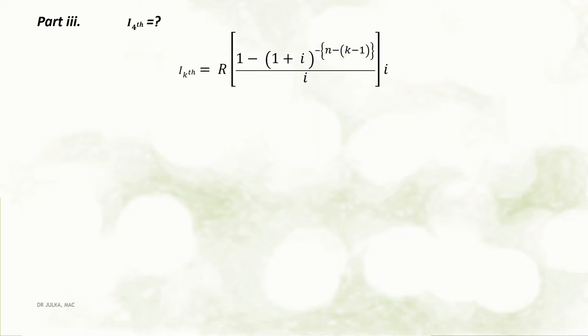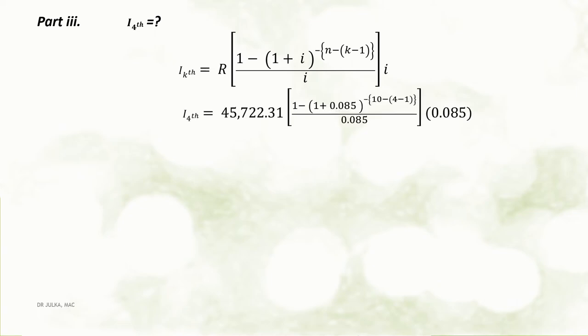Part 3: Here we want to calculate interest contained in the 4th installment. Interest contained in the kth payment is calculated using the formula: R multiplied by [1 minus (1 plus i) raised to the power minus (n minus k minus 1)] divided by i, and the whole multiplied by i. Putting R = 45,722.31, i = 0.085, n = 10, and k = 4, we get the interest contained in the 4th payment as Rs 19,892.57.